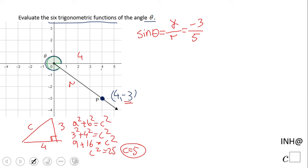So negative 3 over 5, or negative 3 fifths. What about cosine? The definition of cosine is X over R. So in this case, we're going to have 4 over 5. What about tangent?